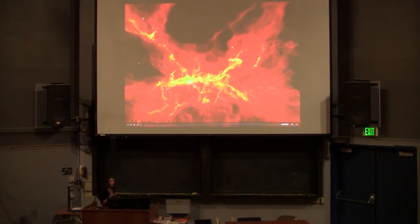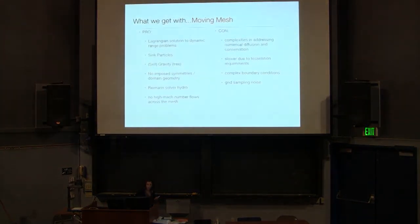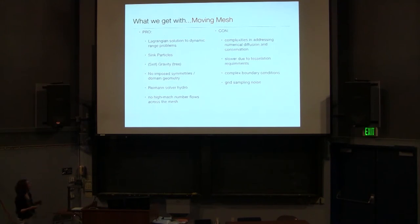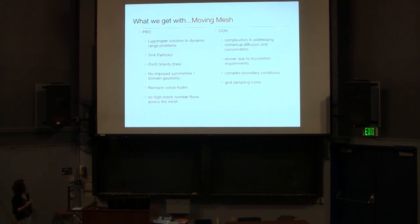I want to spend a few minutes on a numerical technique that you're not going to be experimenting with during this lecture, but one that I think you may have an opportunity to experiment with in the future — I hope this code will become publicly available in the next few years. That's a moving mesh code. You advect your mesh along with your flow, so you get the Lagrangian aspects of an SPH code and all of the other hydro-capturing features of a code with a Riemann solver. The disadvantages are there are a lot of complexities in addressing numerical diffusion and conservation because of the way that you're advecting your mesh.